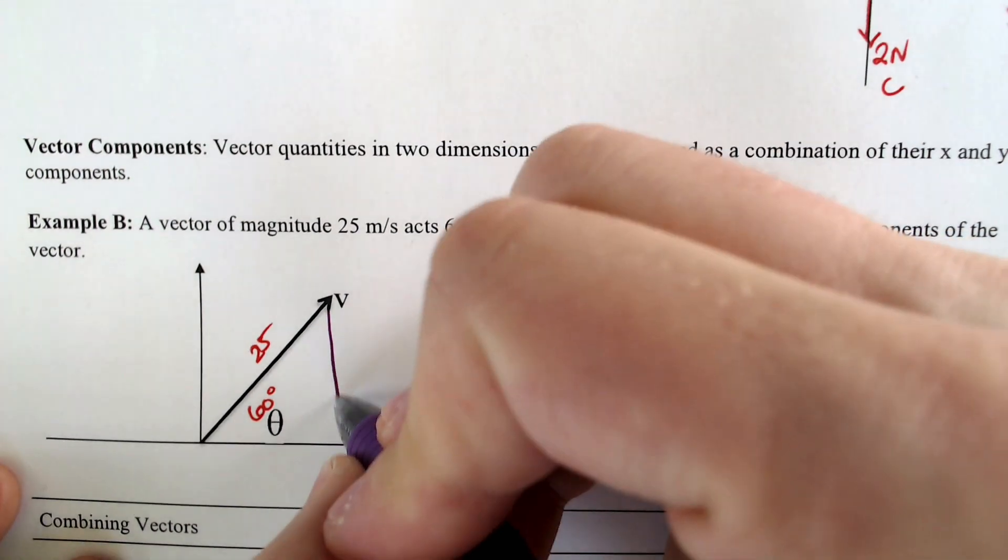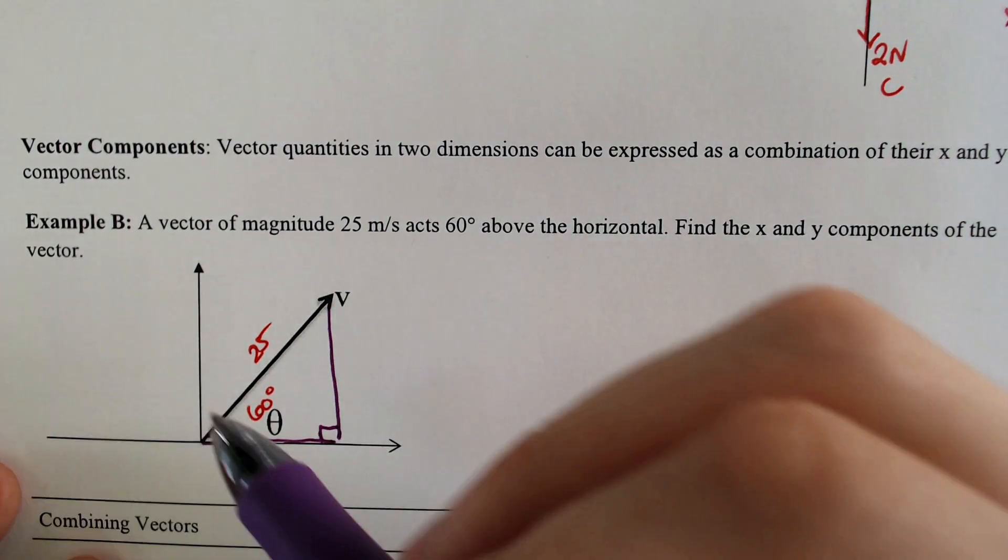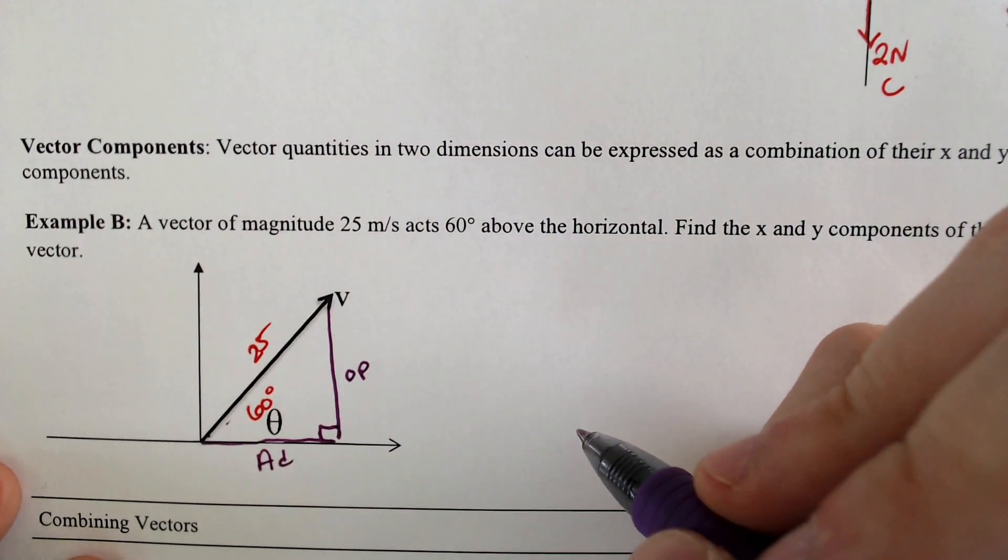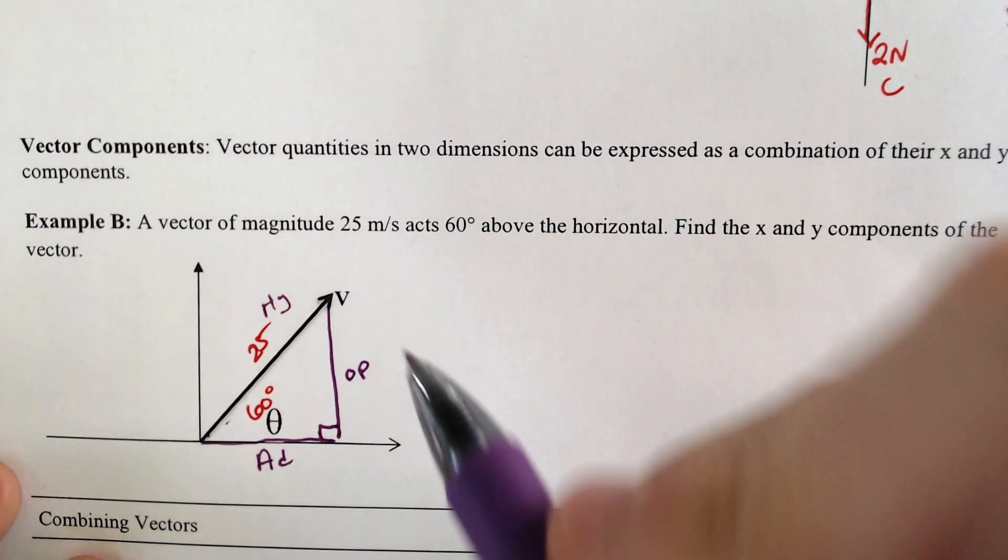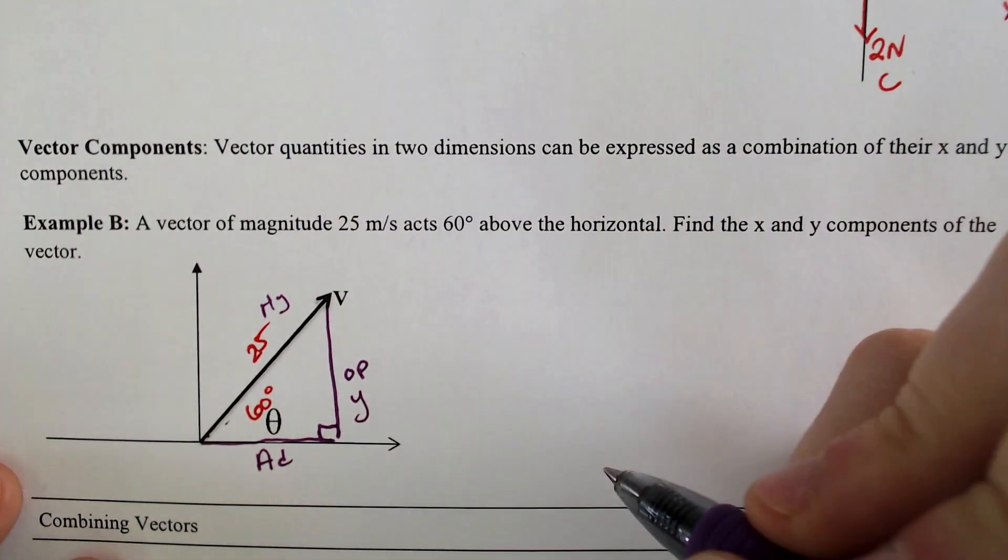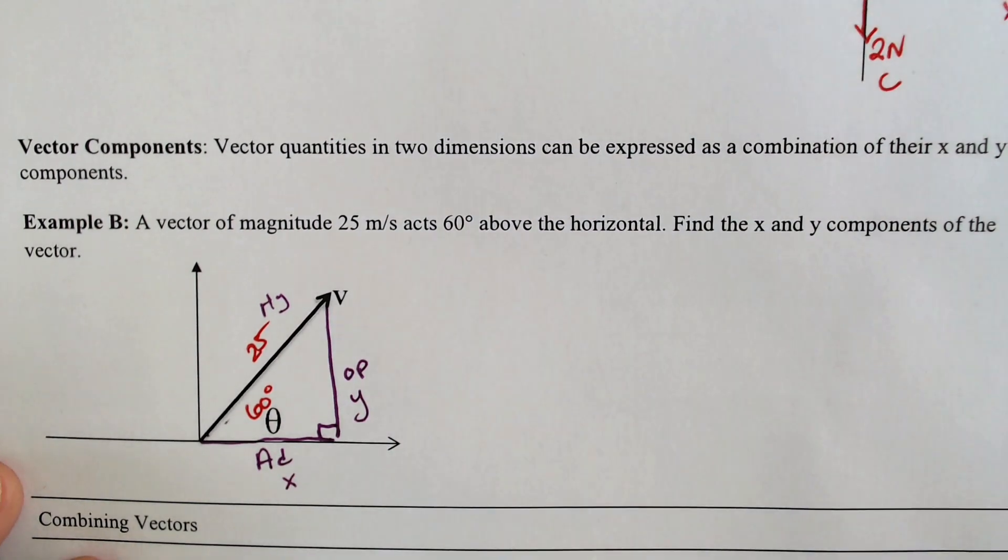And then you can label your opposite side and your adjacent side, and then this would be your hypotenuse, and you may notice that your opposite side is the y value, the up and down, and the adjacent side is the x value.